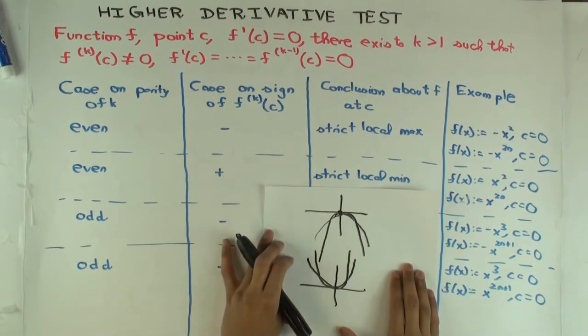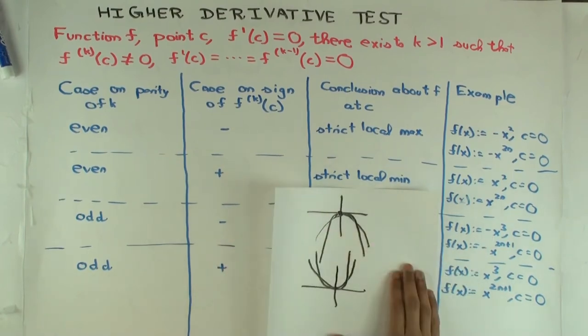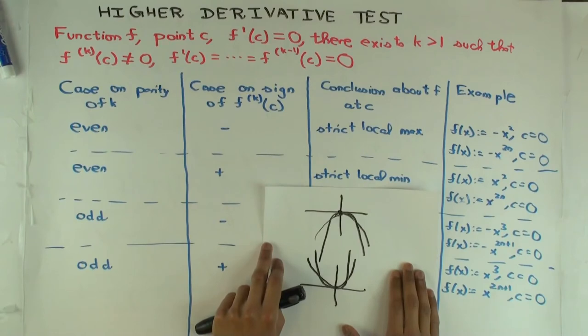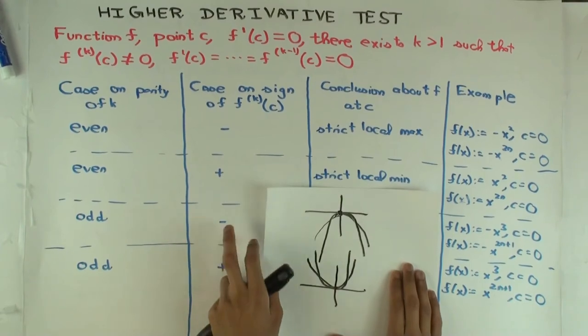So now let's go to odd and negative. So odd and negative, I have negative x cubed. Let's just check that it fits this setup. So negative x cubed. How many times do you need to differentiate it to get a non-zero valued thing at c equals 0? Three times. And what's that value? Negative six. So it's odd and negative.